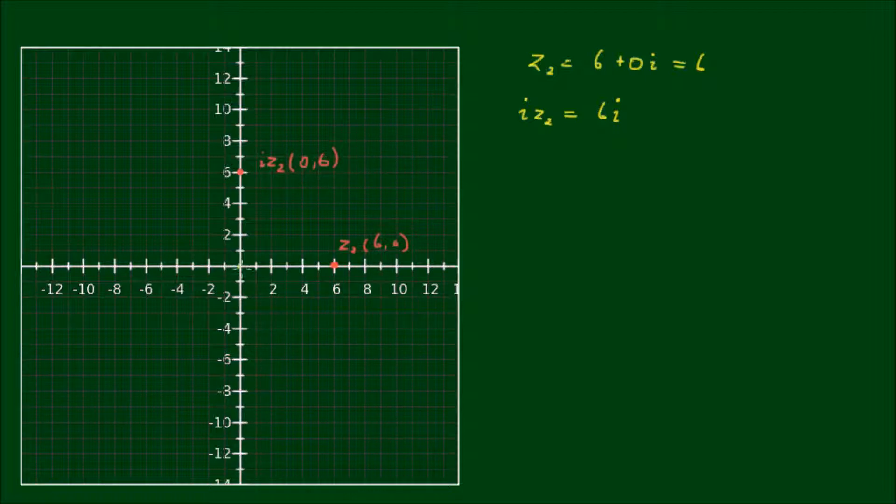And if I draw a vector from the origin to the original z2 called 6, 0, this is what it would look like. And if I draw a vector from the origin to iz2, this is what it would look like.